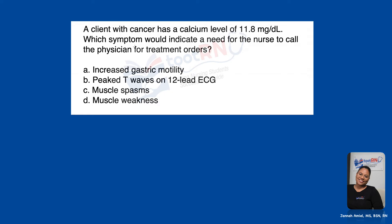Straightforward — this question is just asking us which symptom would indicate a need for the nurse to call a physician for treatment orders. So which one of these things, if it happens, means I have to call the physician? It's telling us the client has cancer and a calcium level of 11.8. Yes, it's up to us to know if that's normal or not — too high or too low — and which one of these things we need to call the physician about. So let's work from the point of: I don't know if that's normal. How do I figure out the answer?